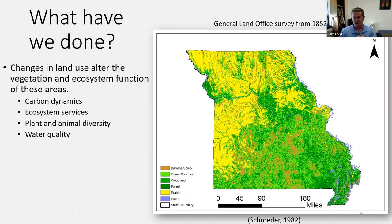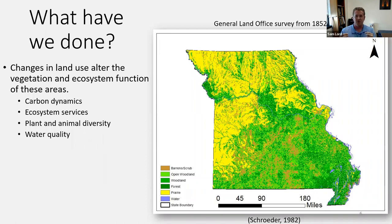When we change land use, we alter vegetation and ecosystem function. Some of those things include carbon dynamics, ecosystem services, plant and animal diversity, and of course water quality. I'm going to try to convince people — even though you probably don't need convincing — that there are other means by which we need to conserve these ecosystems and how important they are beyond even just these details.